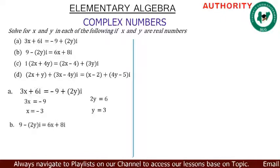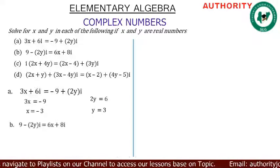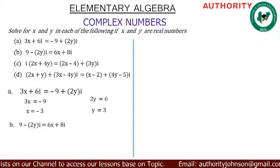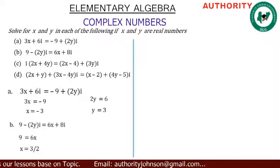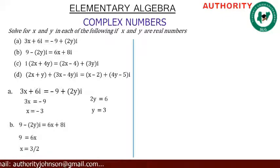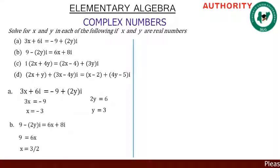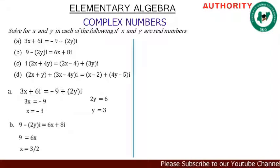For part b: 9 minus 2yi equals 6x plus 8i. The real part on the left-hand side is 9, and on the right-hand side is 6x. Equating them: 9 equals 6x. Dividing both sides by 6 gives x equals 9 over 6, which reduces to 3 over 2.